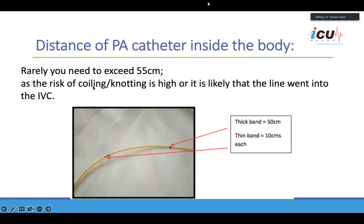The catheter is marked with lines indicating distance — rarely would you need to exceed more than 55 centimeters. This is another safety measure to avoid coiling, knotting, or ending up in the pleural space.